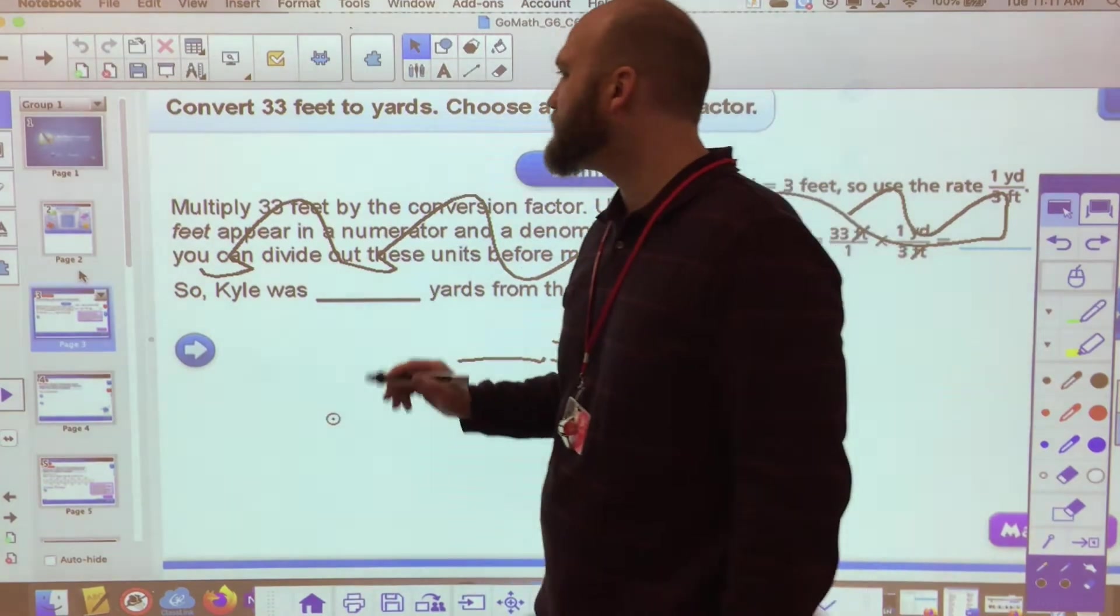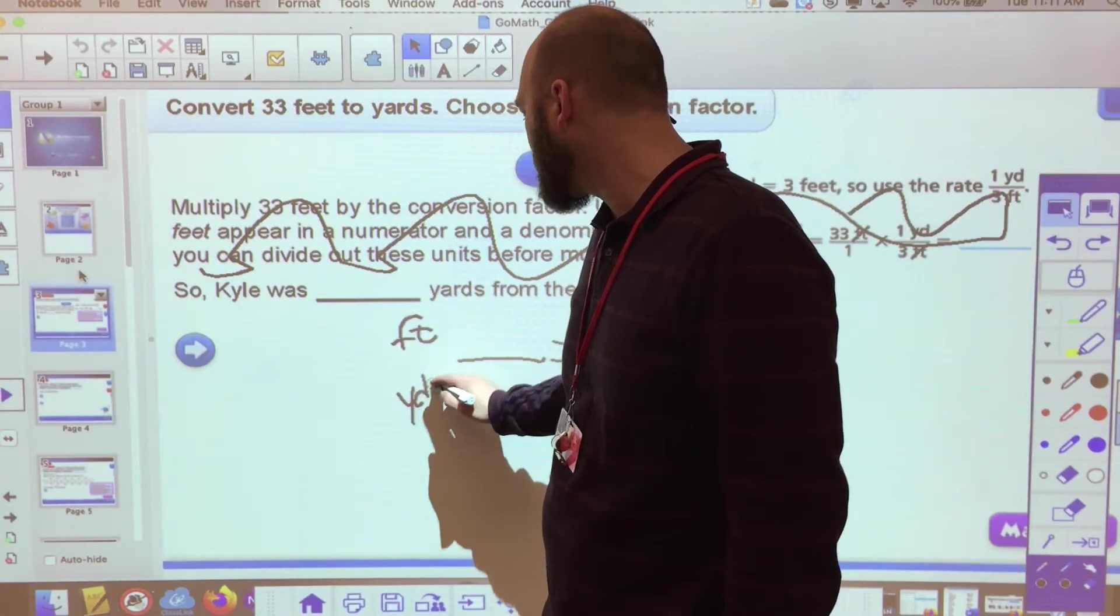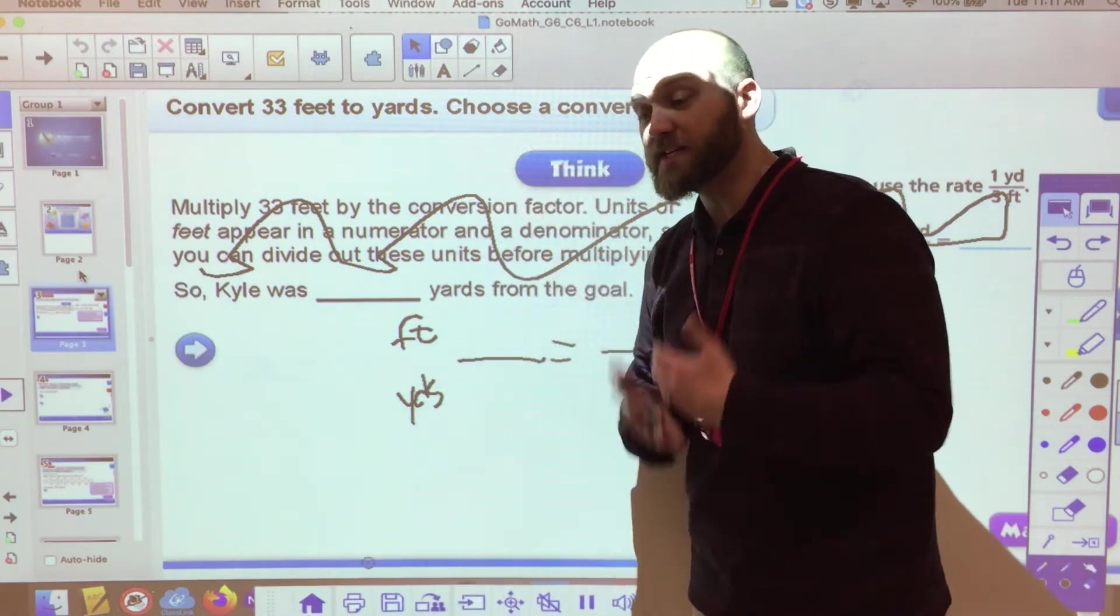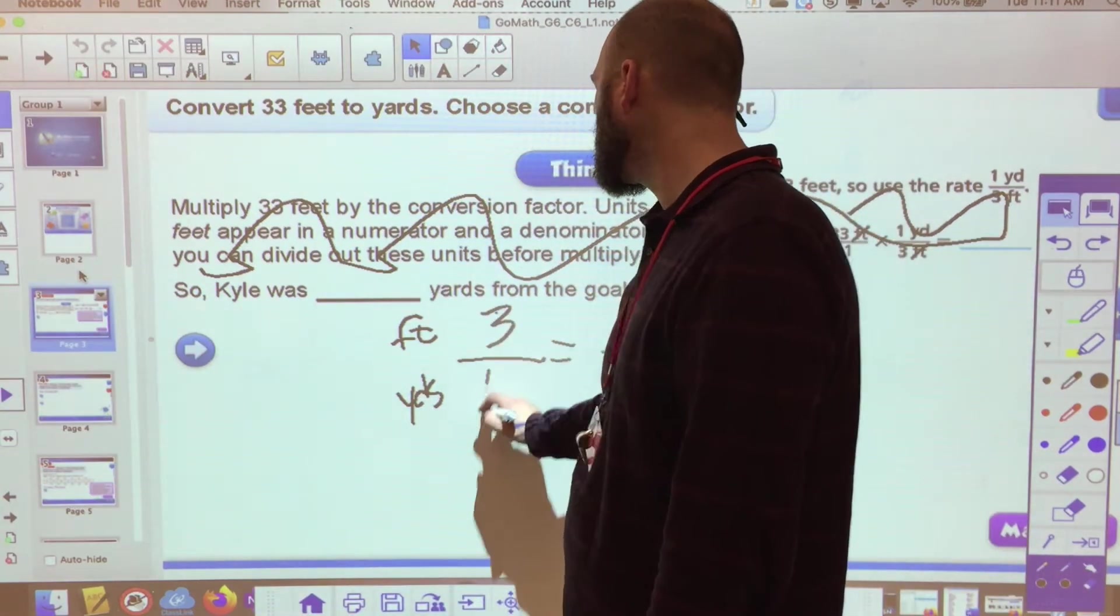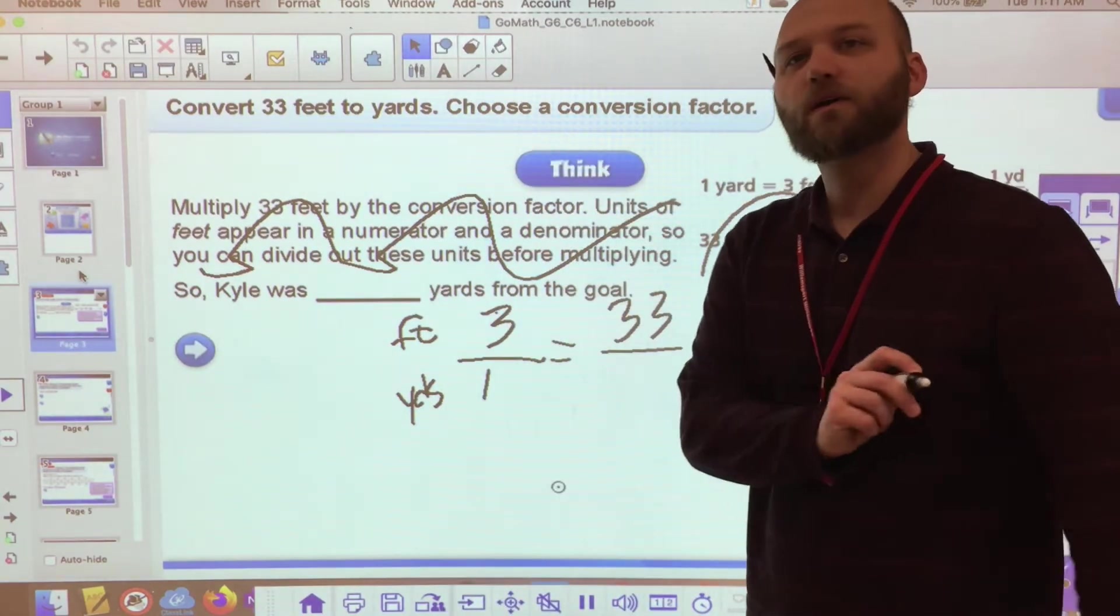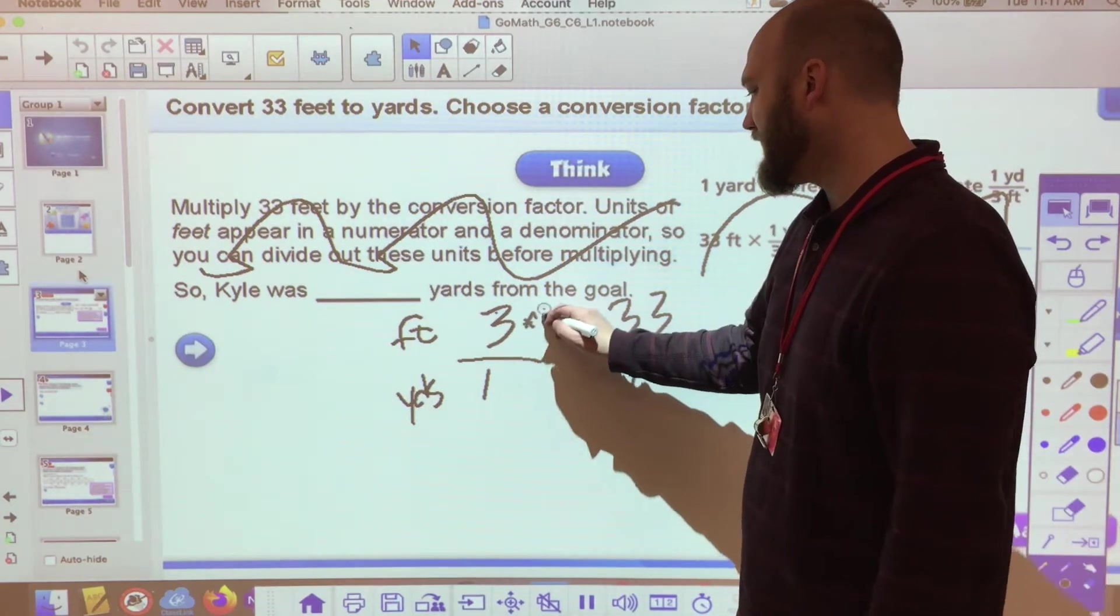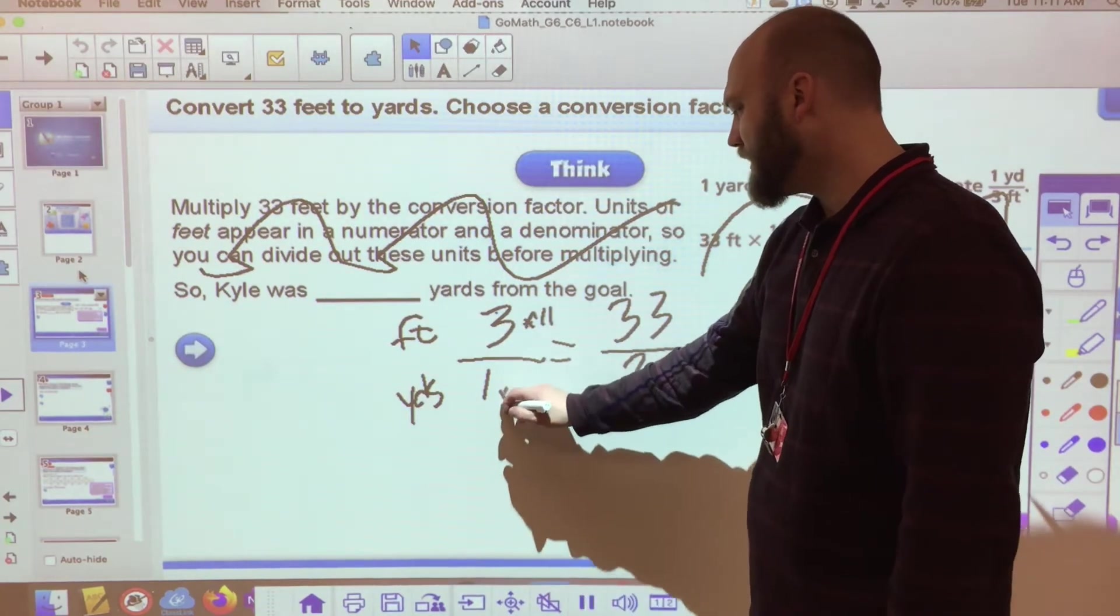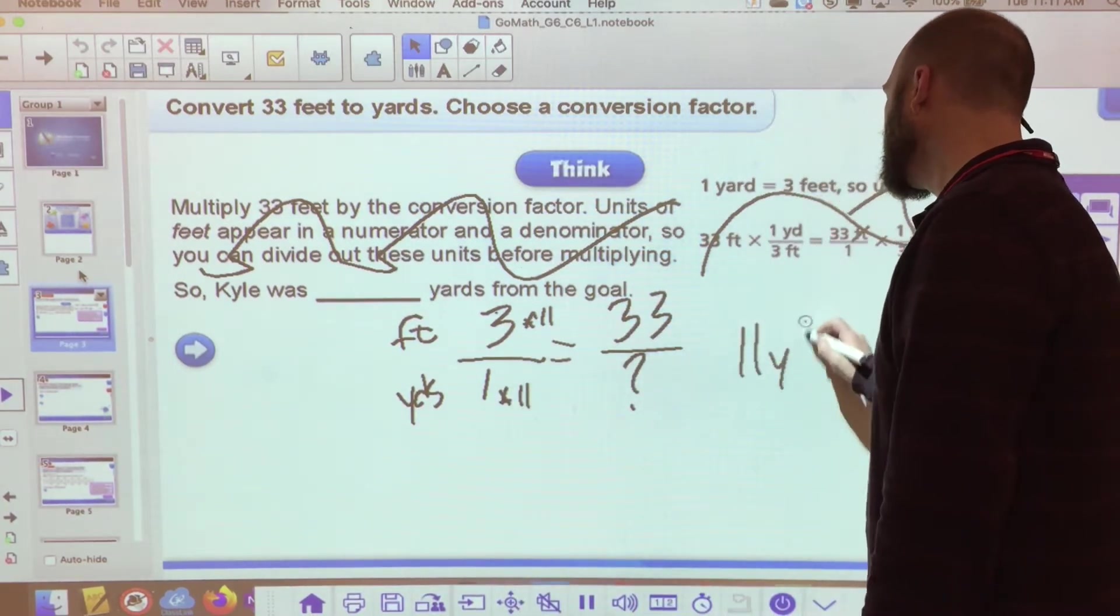I would convert thirty-three feet to yards. So the first thing I'm dealing with are feet and yards. And I would ask myself, well, what is my rate? How many feet to one yard? Well, there's three feet to one yard. And I have thirty-three feet. So what do I do? How do I go from three to thirty-three? Times eleven. And whatever I do to the top, I do to the bottom and I end up with eleven yards.